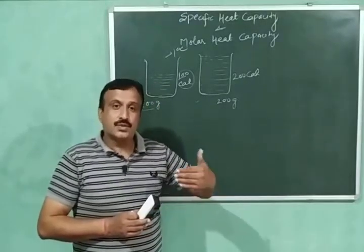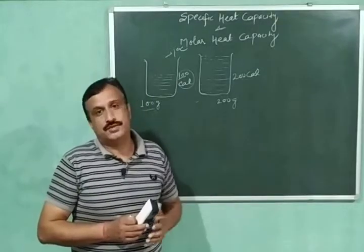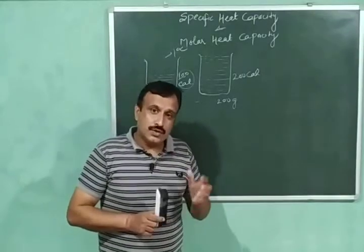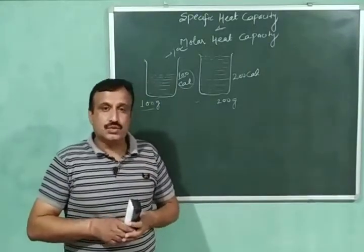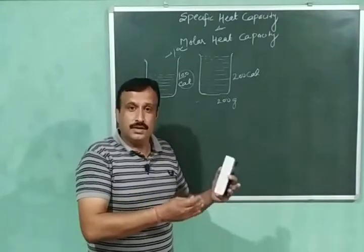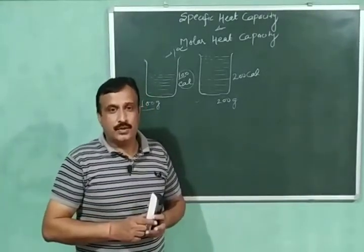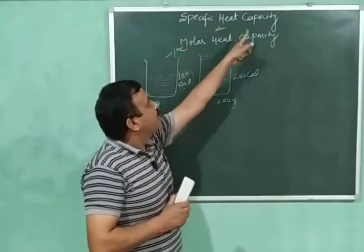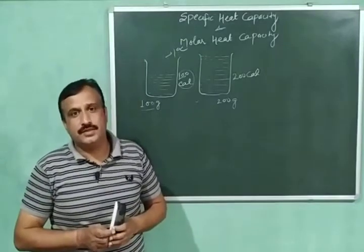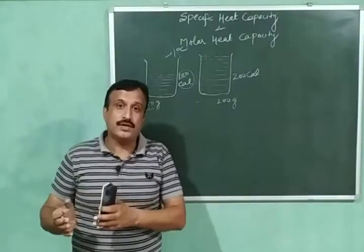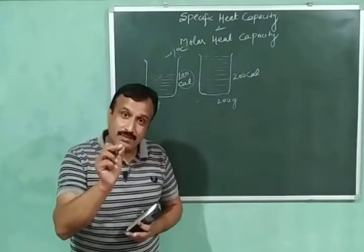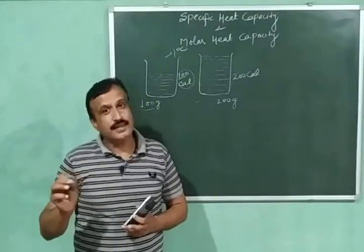Heat capacity increases with increase in mass of the substance or the system. So there was a need for scientists to think about a quantity which does not depend upon the mass. Then specific heat capacity came into existence. Specific heat capacity is the amount of heat required to increase the temperature of 1 gram of a substance through 1 degree Celsius.